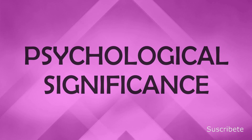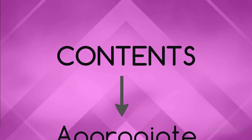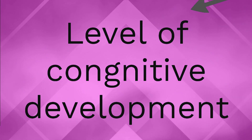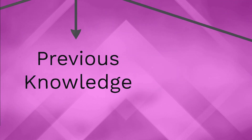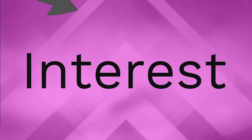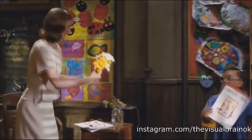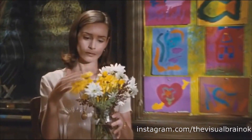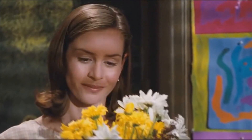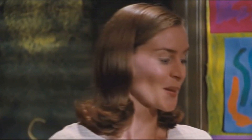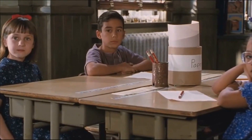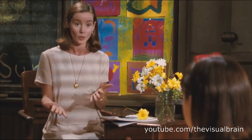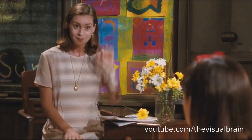Finally, we have psychological significance. This occurs when the contents are appropriate to the level of cognitive development and the previous knowledge that the student has, and in addition respond to their interests. In the 1993 film Matilda, we can see a clear example of psychological significance when the teacher Miss Honey decides to review previous contents so that Matilda, who has just joined the class, can catch up. The teacher reviews the multiplication tables — specifically the two times table — and we can see that all students respond actively and are ready to advance to the next level.